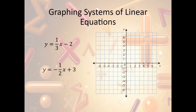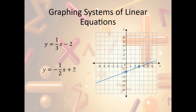Now let's take a look at how we can graph systems of linear equations. All this means is we're going to graph both lines at the same time. For the first one, we plot the y-intercept at negative 2, then use a slope of one-third — up 1, right 3 — and connect the dots. Then we plot the second line on the same graph: y-intercept at 3, slope of negative one-half — down 1, right 2 — and connect the dots. Notice now I have a point where they intersect, right there — that is the solution to the system of equations.